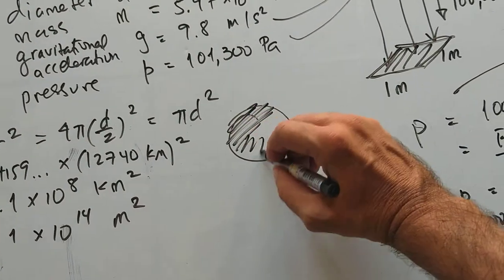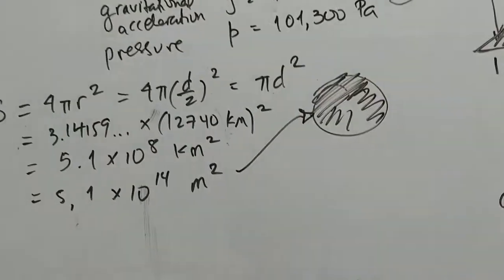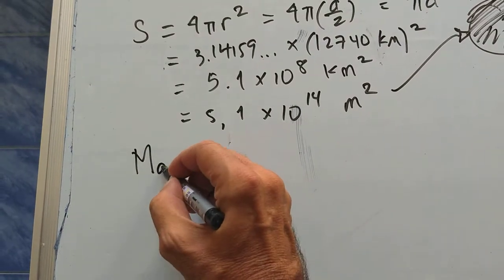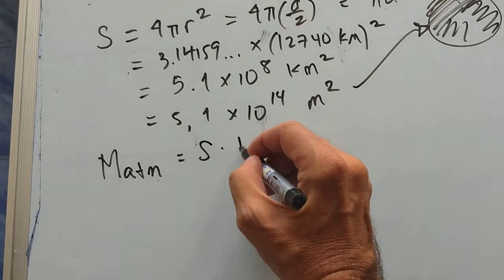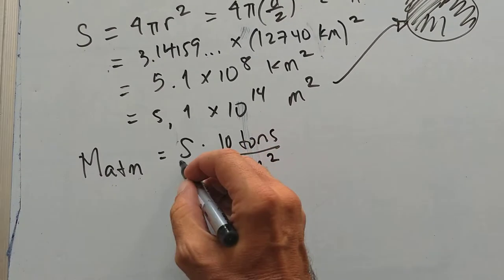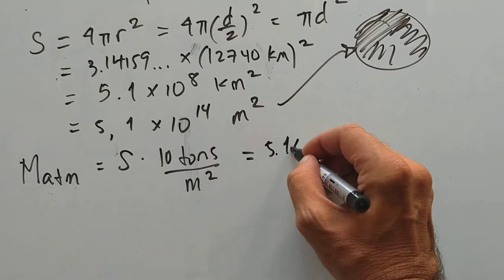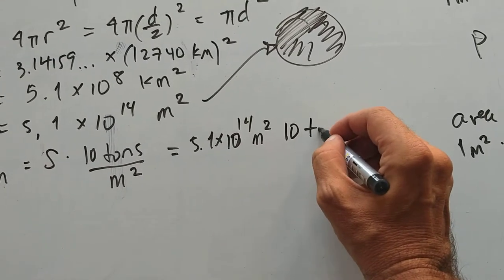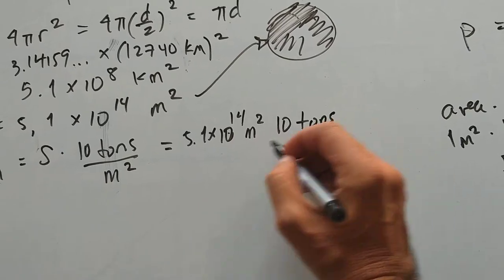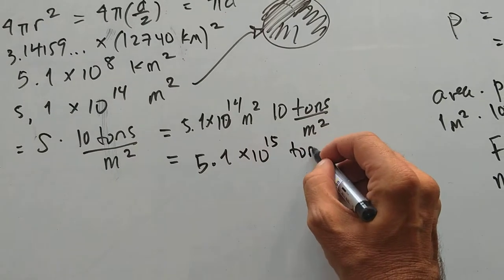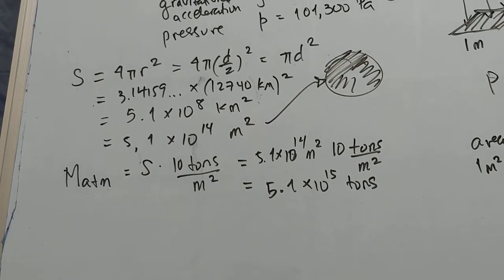I have the surface area of the Earth, 5.1 times 10 to the 14 meters squared. And each square meter has 10 tons of mass sitting on top of it. So the total mass of the atmosphere is S times 10 tons. It's 10 tons per meter squared times S. So I get 5.1 times 10 to the 14. I'm doing it slowly to show you how the units work out, which is the most important thing in all of these calculations. 5.1 times 10 to the 15 tons.